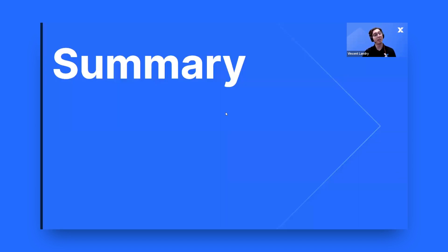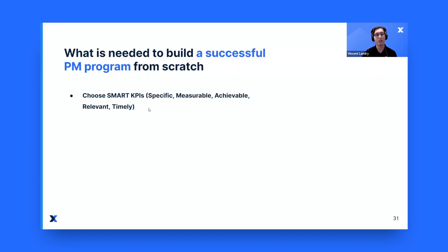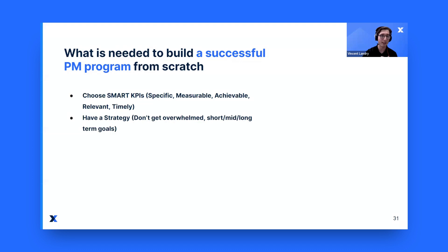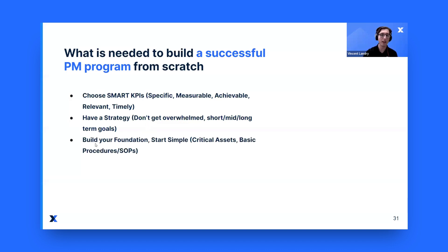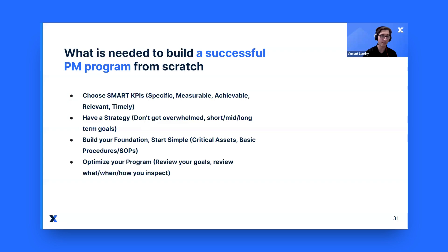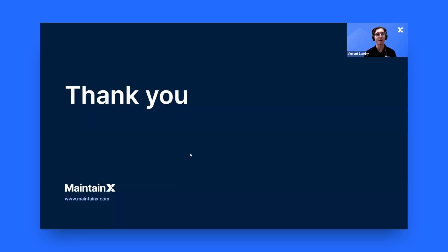For a summary, we talked about creating a PM program from scratch. Choose SMART KPIs — Specific, Measurable, Achievable, Relevant, and Timely. Have a strategy: don't get overwhelmed, don't try to do everything at once. Have short, mid, and long-term goals. Build your foundation — start simple, start with your critical assets and basic procedures and SOPs. Optimize your PM plan by reviewing your goals and how you do your inspections. And last but not least, leverage technology: use a CMMS. Use MaintainX. Thank you everyone, and I hope you have a great rest of your day.